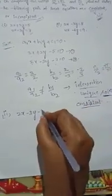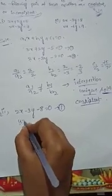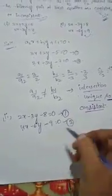Next example, second one. The equation 2x minus 3y plus 8 comes to this side, giving 2x minus 3y minus 8 equal to 0 — this is equation one. Next equation: 4x minus 6y plus 9 comes to this side, giving 4x minus 6y minus 9 equal to 0. Now let's compare the ratios.